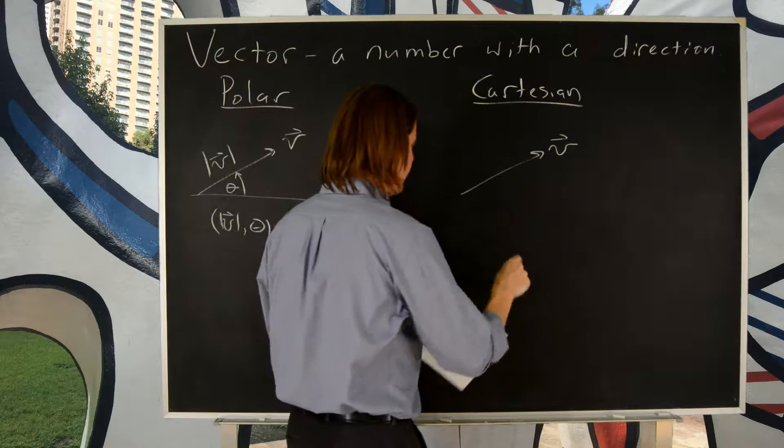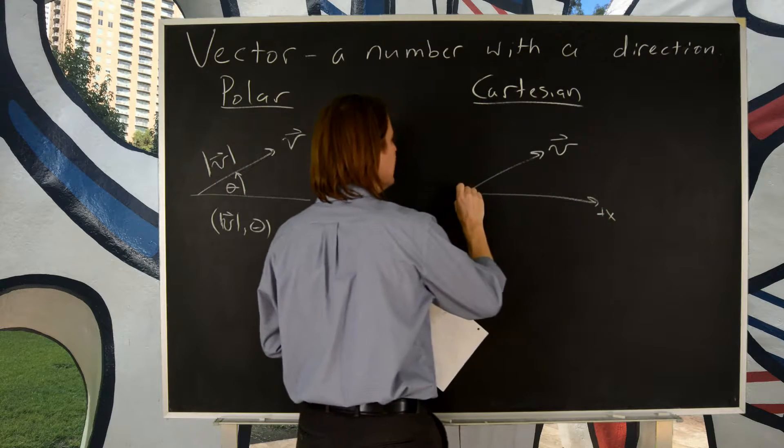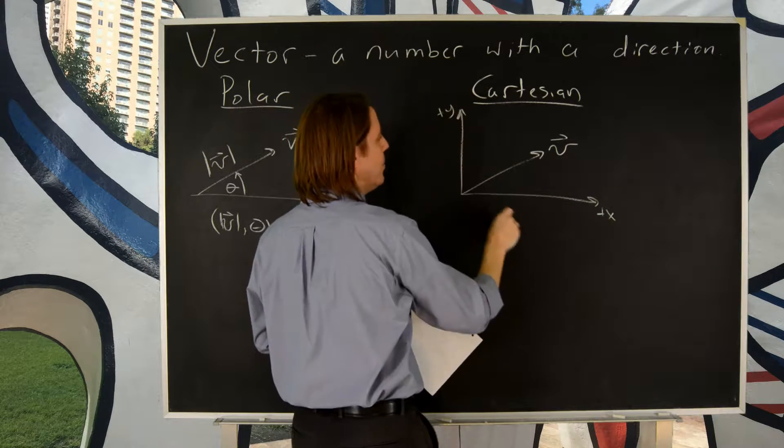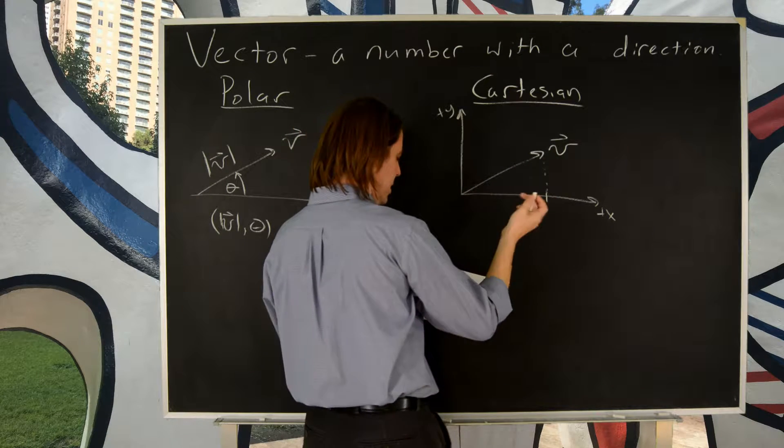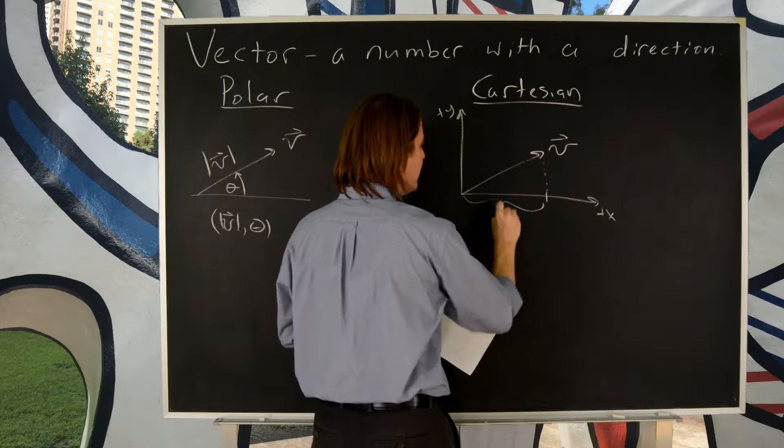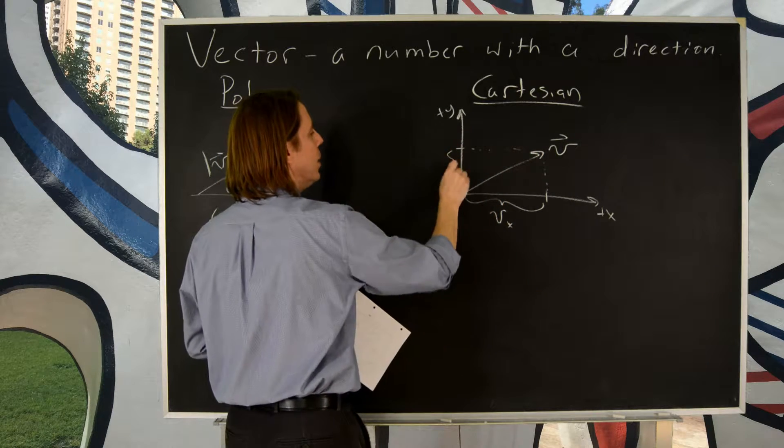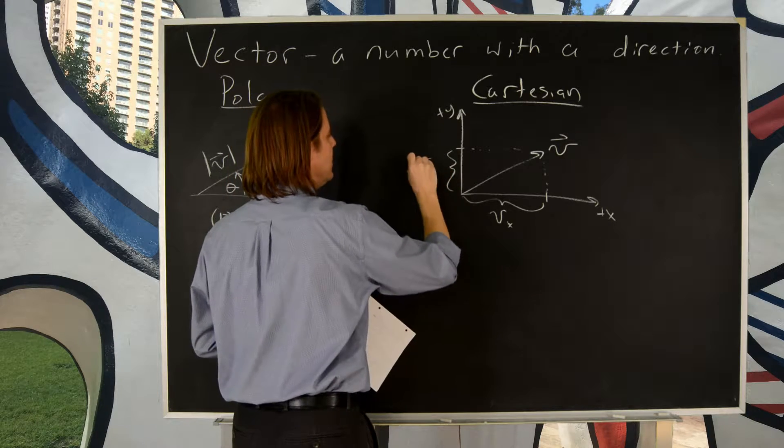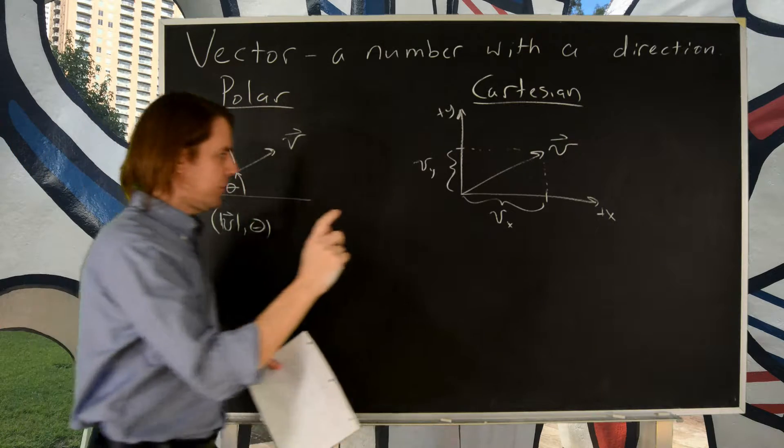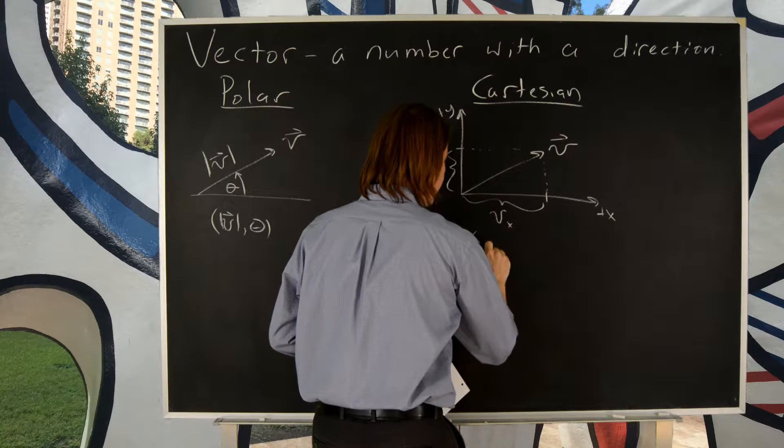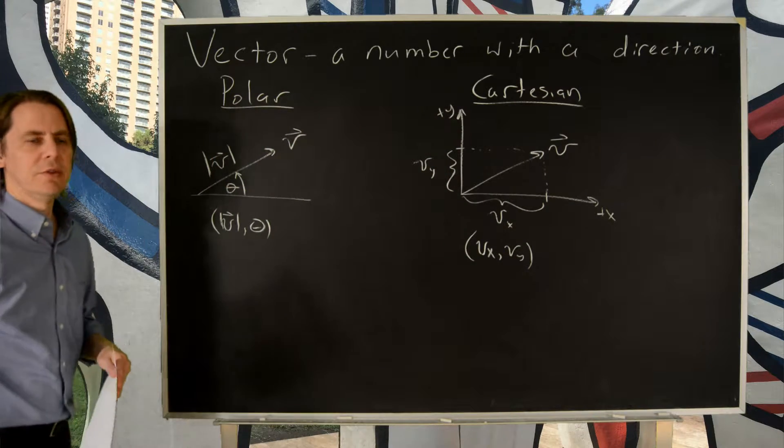In Cartesian coordinates, same vector. We think of it as being in an XY coordinate system like this. And we think about the component. How much of the length of this vector is along the X axis. So this is like VX. And we say how much of it is along the Y. And that's VY. So just like Polar, Cartesian requires two numbers to specify the vector. It just requires the two Cartesian coordinates, VX and VY.